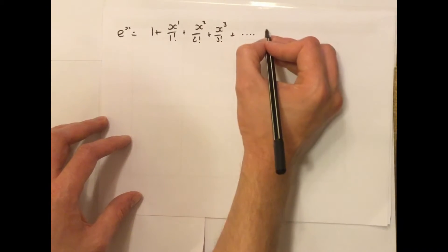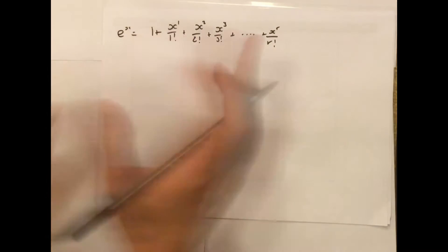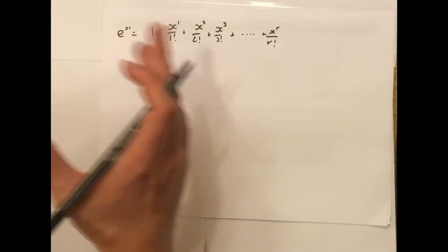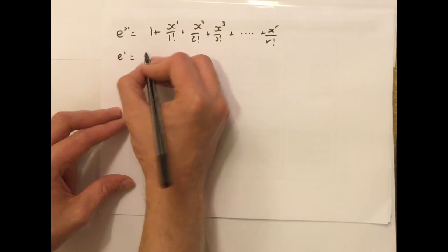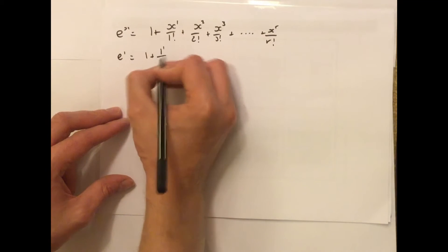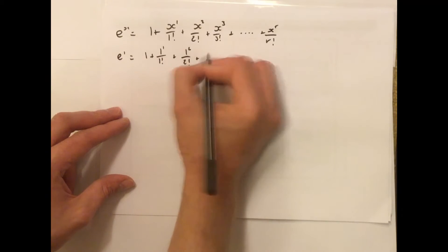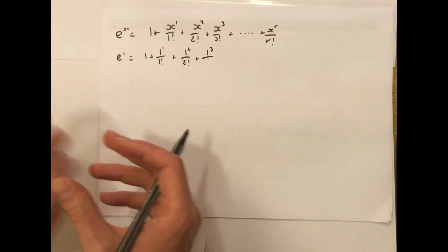Probably like almost infinite on your calculator. So why don't you have a go working out e to the power of 1. We're going to replace all our x's with a 1, 1 squared over 2 factorial. How about you try and work out the first 5 terms and see what it comes to.